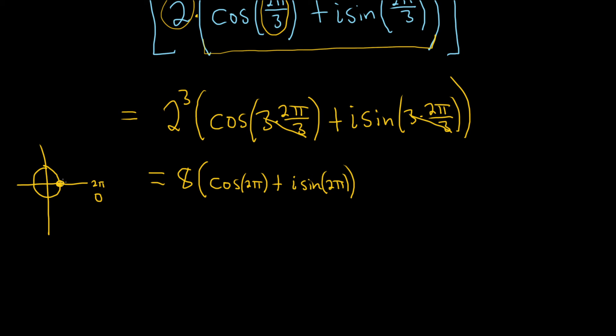And every ordered pair on the unit circle has the form cosine theta, comma sine theta. And so this ordered pair at 2 pi is 1, comma 0. So that means that the cosine of 2 pi is equal to 1.